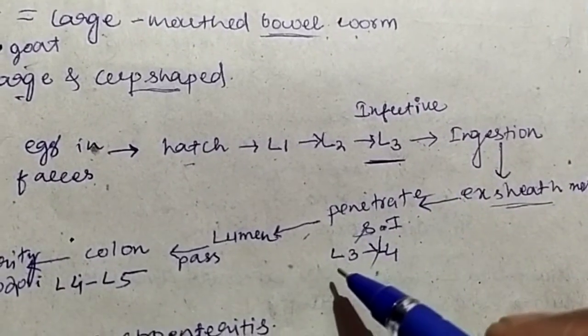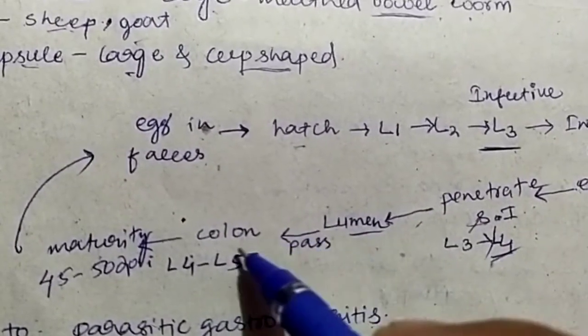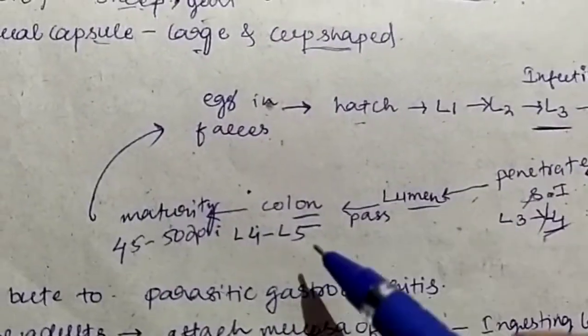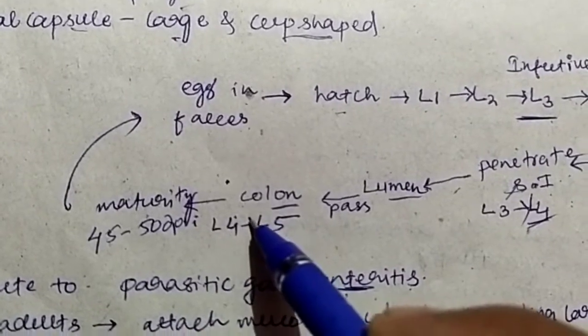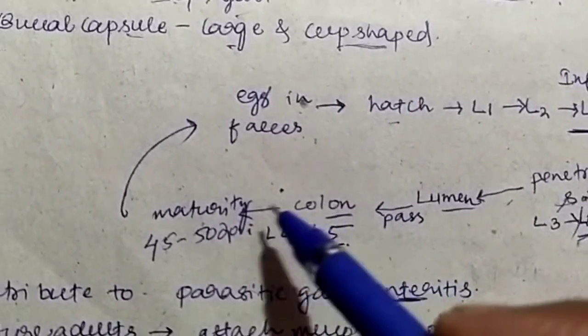During the penetration, L3 will molt to produce L4. Then inside the lumen, it will pass to the colon. In the colon, it will molt to produce L5. Then it will mature in the colon.